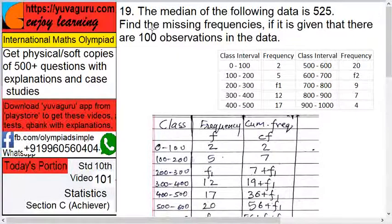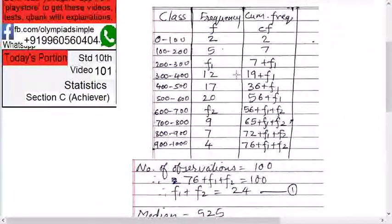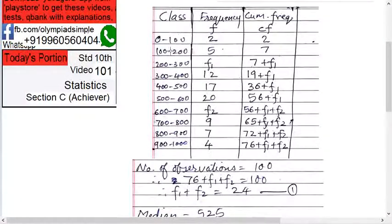So you have to find a cumulative frequency for this. Cumulative means go on adding. So see this: 0 to 100, 100 to 200, I have arranged it. Then frequencies are given. Now we will find cumulative frequency.